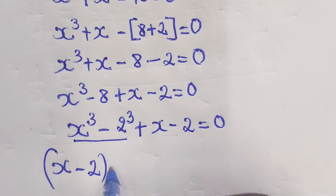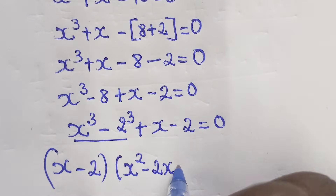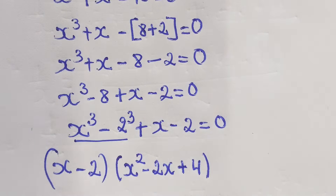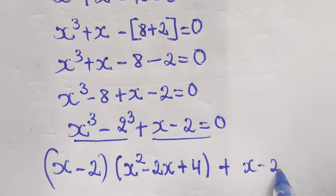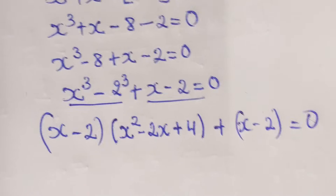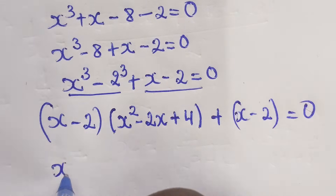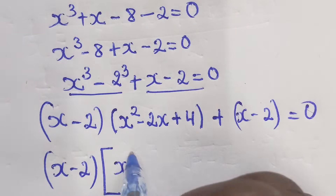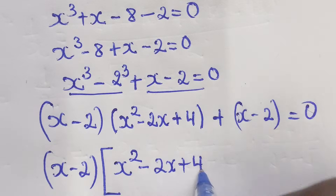So x³ - 2³ equals (x - 2)(x² - 2x + 4), plus (x - 2) = 0. Then you have to factorize: take out (x - 2), opening bracket of (x² - 2x + 4)...